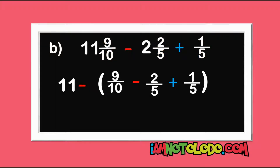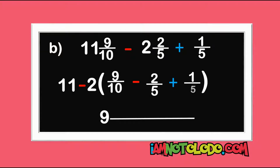11 minus 2 is 9. Now let's solve what is inside the brackets. If you look at the denominators, you will notice they are not the same, so we find the LCM. The LCM of 10, 5, and 5 is 10. 10 in 10 is 1 times 9 is 9, minus 5 in 10 is 2 times 2 is 4, plus 5 in 10 is 2 times 1 is 2, all over 10.